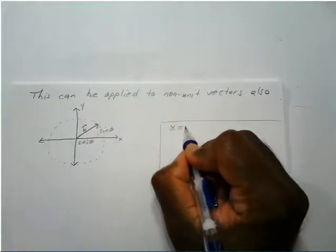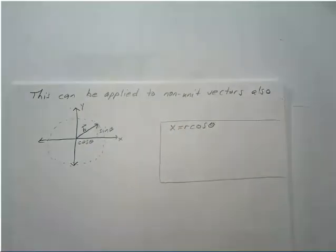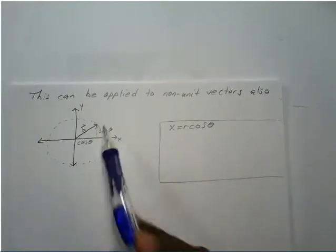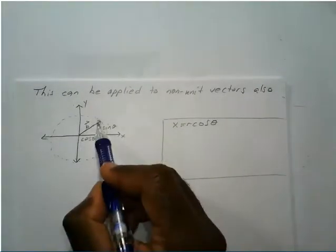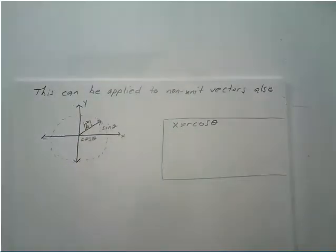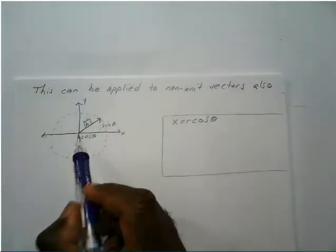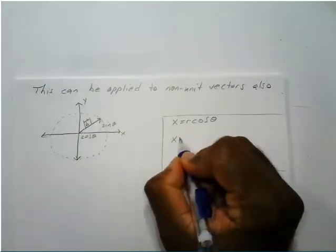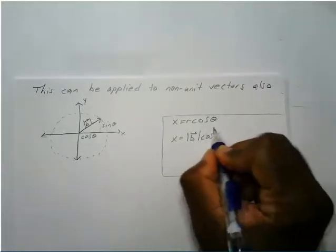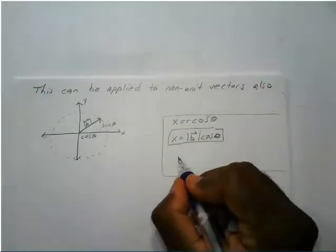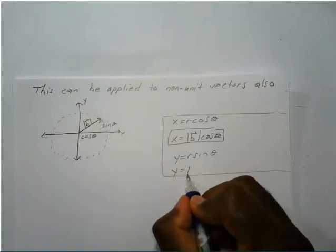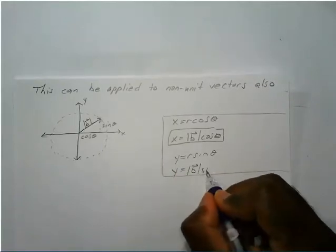We know that X equals R cosine theta. Now in this case the radius isn't one — it's actually just the magnitude of your B vector, which tells the length of the vector. So X will actually equal the magnitude of vector B times cosine of theta. And Y equals R sine theta, so Y will equal the magnitude of vector B times sine of theta.